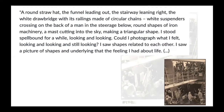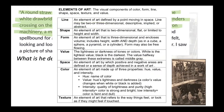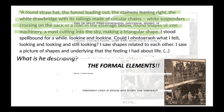He described what he saw: 'A round straw hat, the funnel leading out, the stairway leaning right, the white drawbridge with its railings made of circular chains, white suspenders crossing on the back of a man in the steerage below, round shapes of iron machinery, a mast cutting into the sky making a triangular shape. I stood spellbound for a while, looking and looking. Could I photograph what I felt? I saw shapes related to each other — a picture of shapes and underlying that the feeling I had about life.' That to me goes back to the argument of whether photography is art or technology. An artist is going to see shapes, line, texture, contrast, color and know how to create a composition — those are the elements of art.